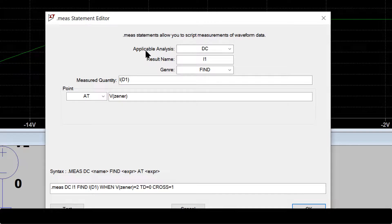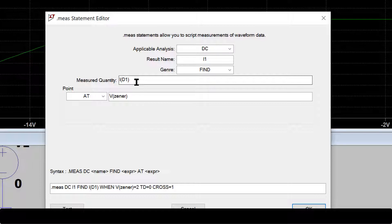So we are using applicable analysis as DC. The result name will be I1. We are going to find the value of the current on D1, so the measured quantity is I(D1).